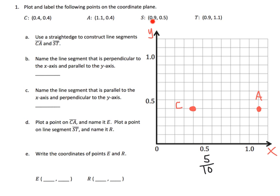So let's do S. So 0.9 on the x coordinate, 0.5 for the y coordinate, and that's going to be 0.9 and 0.5 right there. And then last one, T, 0.9 and 1.1. So 0.9 on the x coordinate, 1.1 on the y coordinate, so that ends up being right here. And that is T.